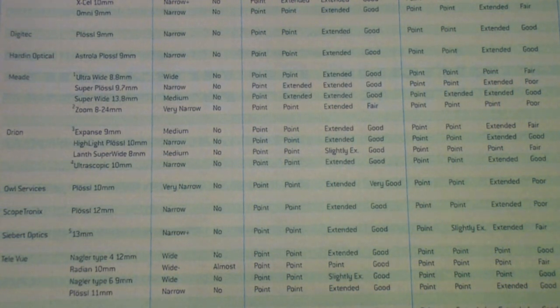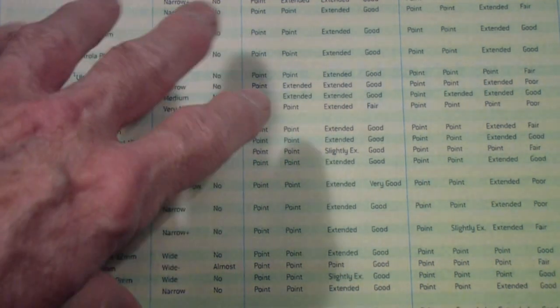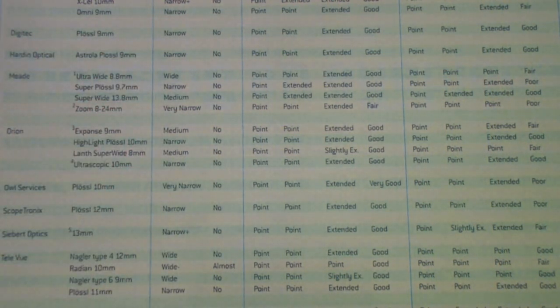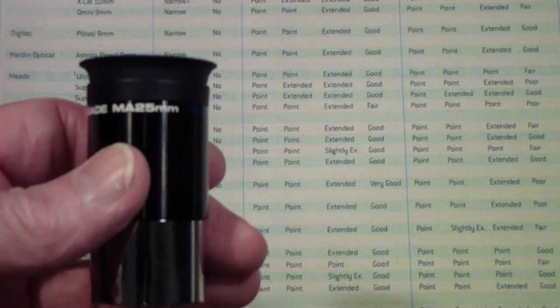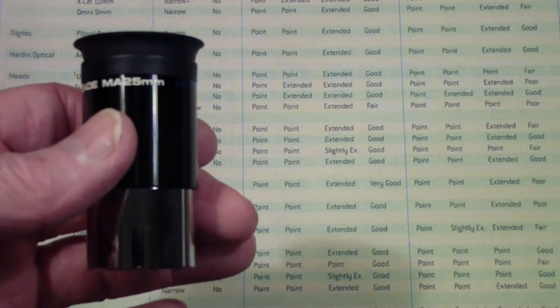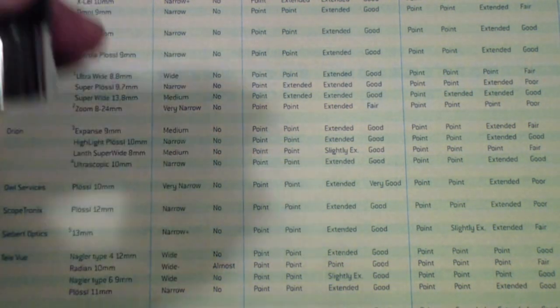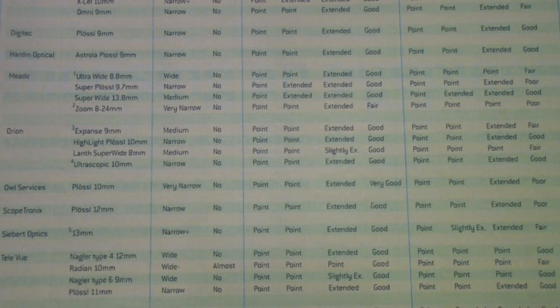And then, as we'll also talk about when we get to part two, you can add a Barlow lens. In part two we will talk about some of these lenses as well as the Barlows that you can use to double the effective focal length. So, for example, if you have a 25 millimeter and you put this into a Barlow lens with a 2x Barlow, it's effectively a 12.5 millimeter. Those can have some advantages, but as we'll also talk about in part two, some disadvantages.